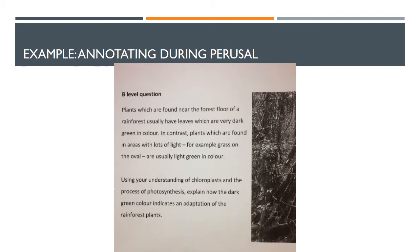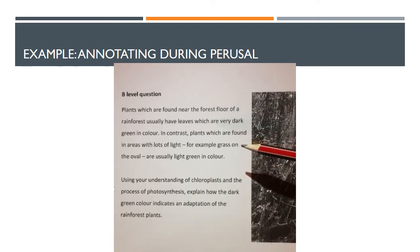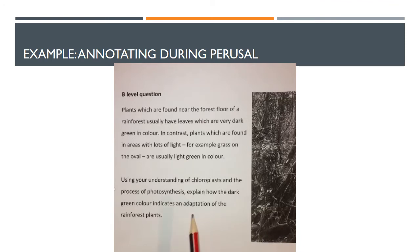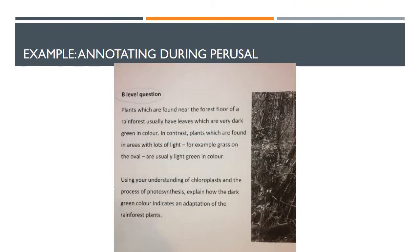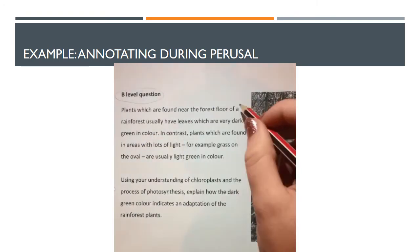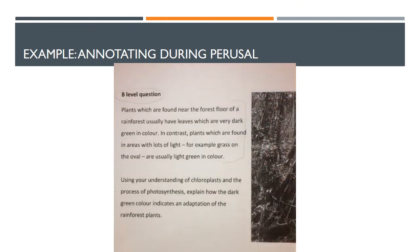If I was looking at this question in perusal, this is the way I'd approach it. Firstly I'd read the question: 'Plants which are found near the forest floor of a rainforest usually have leaves which are very dark green in colour. In contrast, plants which are found in areas with lots of light, for example grass on the oval, are usually light green in colour. Using your understanding of chloroplasts and the process of photosynthesis, explain how the dark green colour indicates an adaptation of rainforest plants.' I can see it's a B level question, and I also note there's a picture of rainforest plants — that picture along with the written information is stimulus material to help guide my answer.